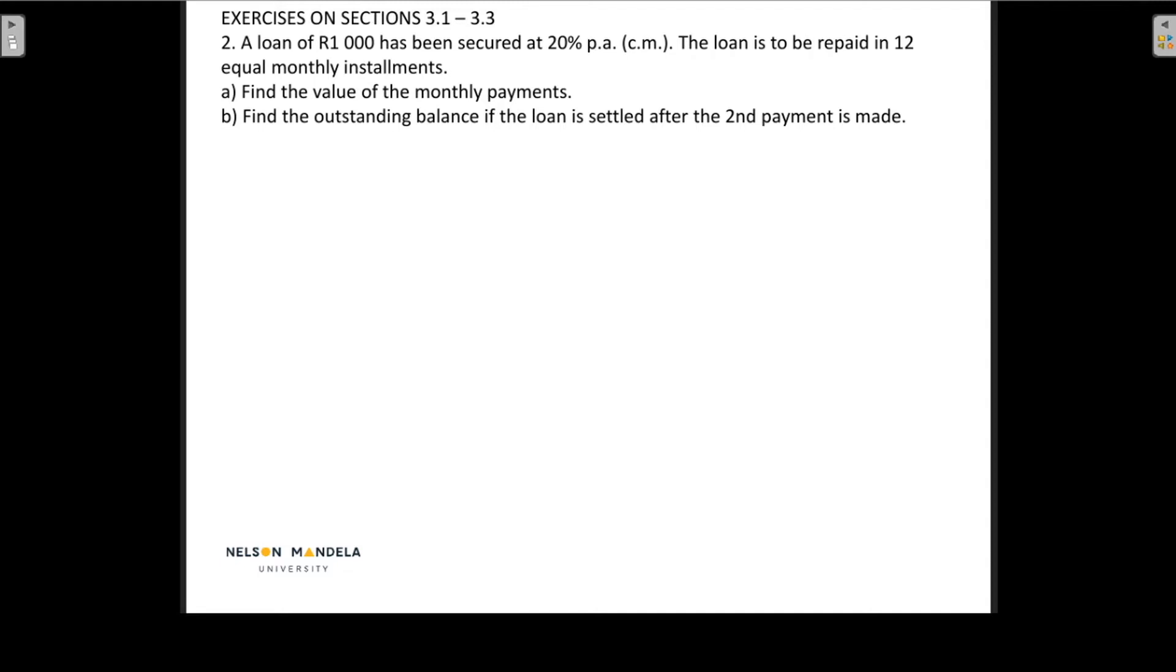A loan of a thousand rands has been secured at 20% per annum compound and monthly. The loan is to be repaid in 12 equal monthly instalments. Then in the A part we want to find the value of the monthly payments and the B part find the outstanding balance if the loan is settled after the second payment is made.